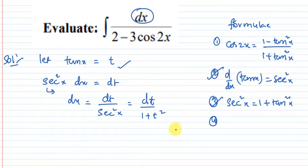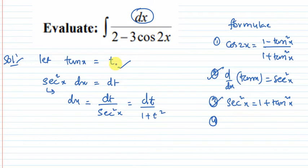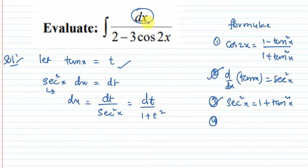Since tan x equals t, we have t squared. Secant squared x equals 1 plus tan squared x, and tan x equals t, so tan squared x equals t squared. Therefore, dx equals dt divided by 1 plus t squared.